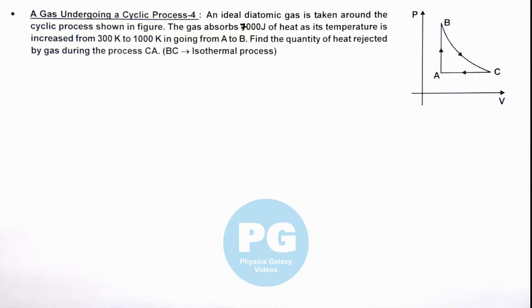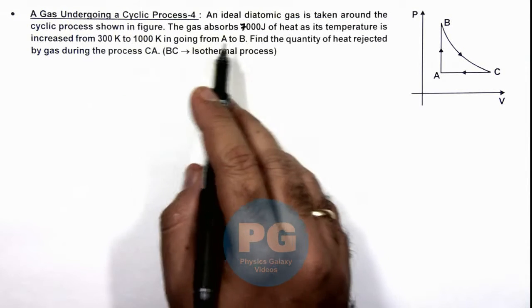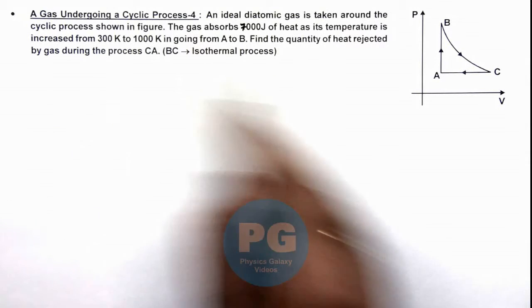In this illustration, we'll discuss another case of a gas undergoing a cyclic process. We are given that an ideal diatomic gas is taken around the cyclic process as shown in the figure.